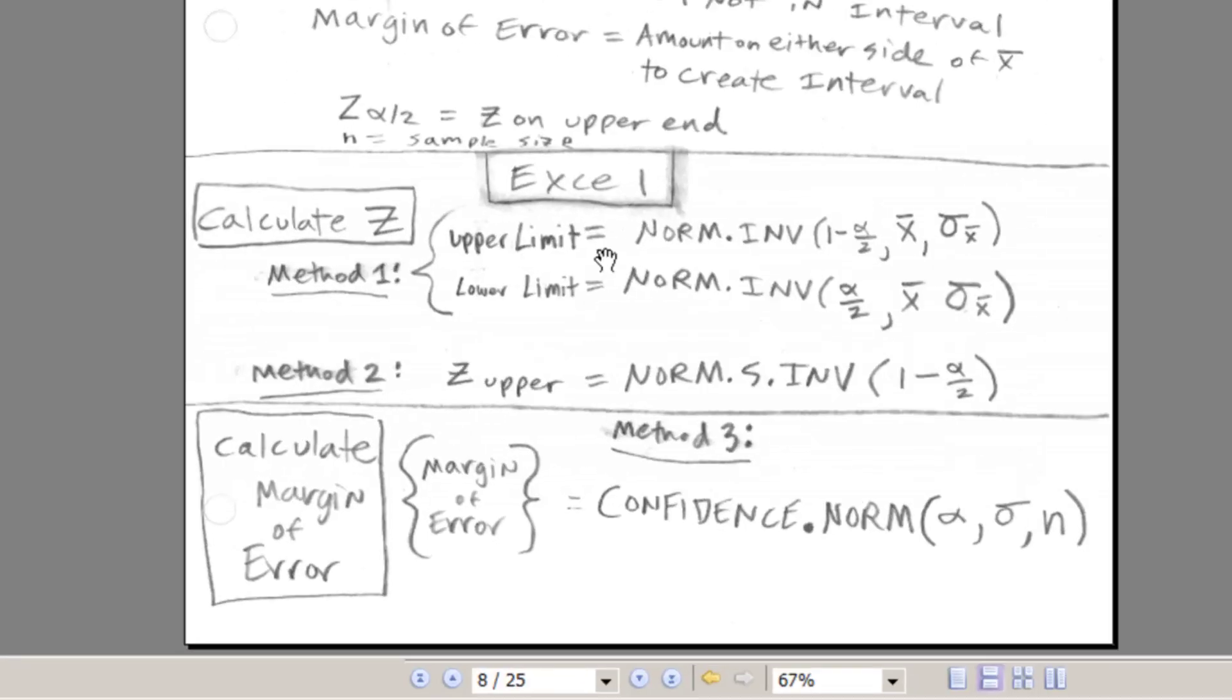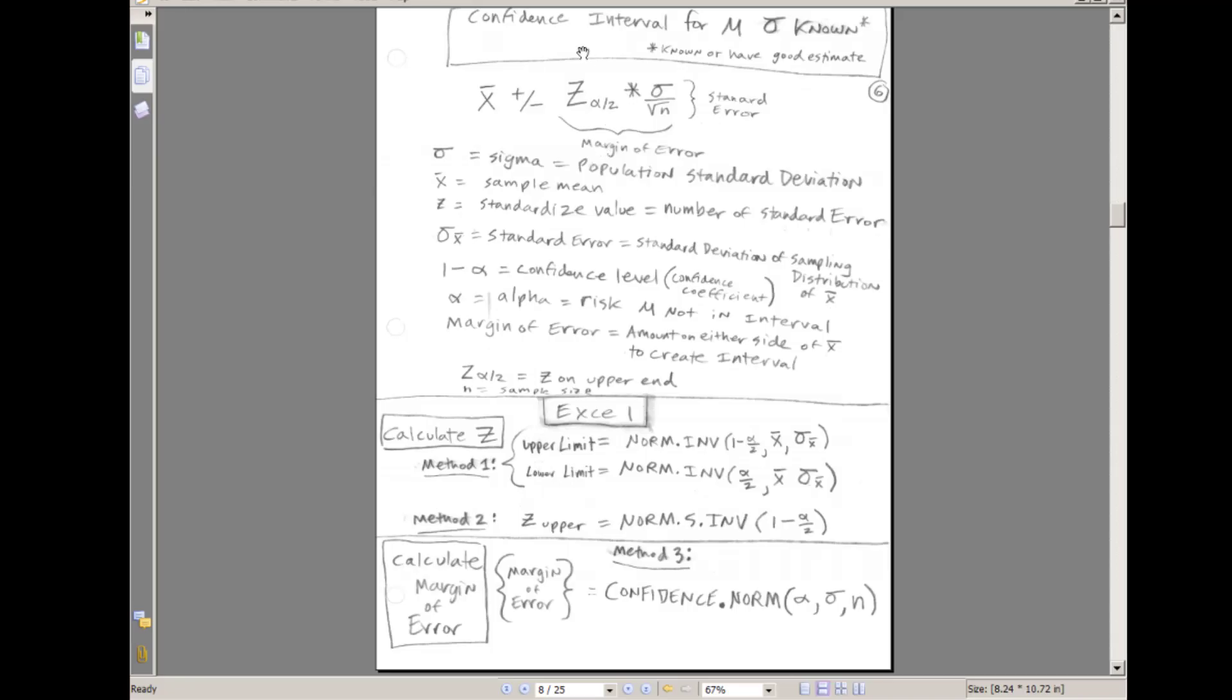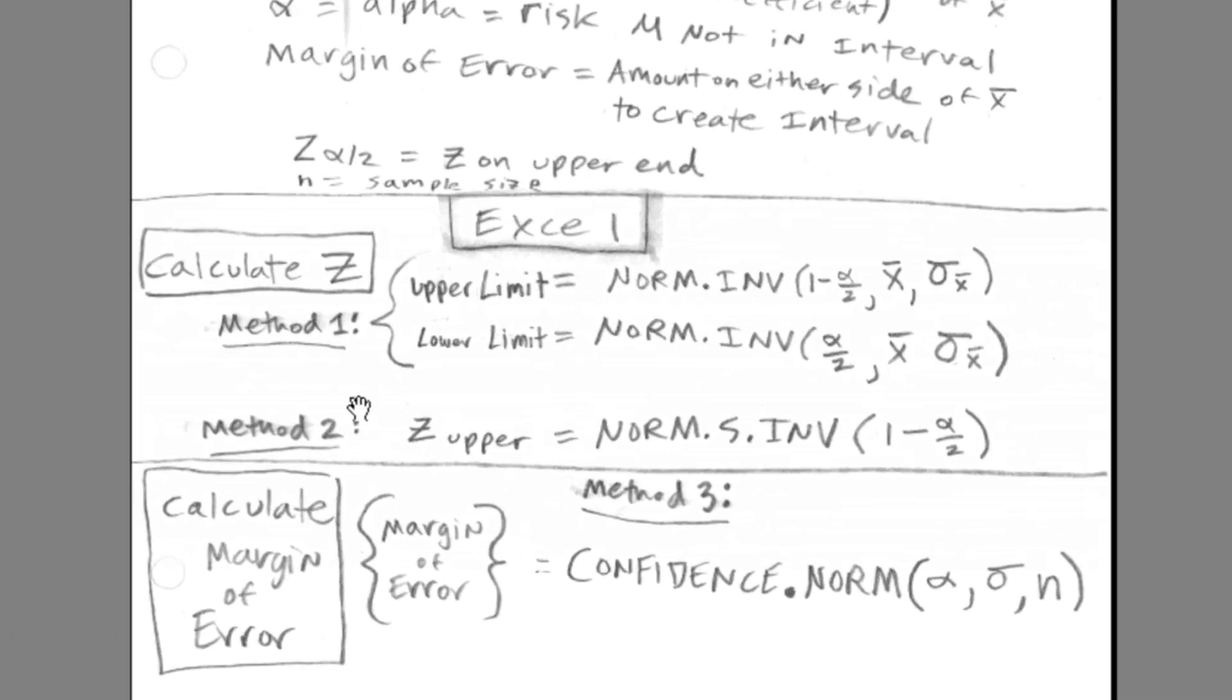In our next video, we'll calculate all of these in Excel. We're going to have method 1, 2, and 3. Norm dot inverse function, we've already used a bunch. We are actually going to be able to calculate the upper limit and the lower limit directly using the norm dot inverse. In the textbook, they don't show you this. They show you this method 2 and 3, but I'm going to show you this just because if we've already been using these, and we can use these to calculate an upper and lower limit. Method 2, calculate the z upper. We saw this one earlier. Also, norm dot s dot inverse. That gives you that z, and then you already have the data for calculating this, so you multiply those together, and that's the margin of error.